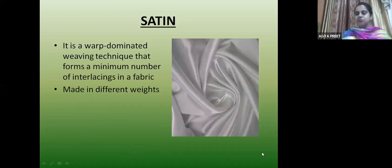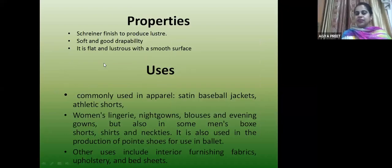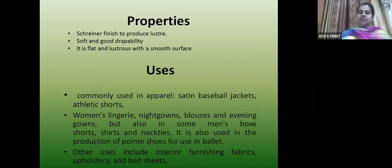Satin fabric is warp-dominated weave and comes in different weights. Properties: finished to provide lustrous, soft and good drapability — flat and lustrous. If the surface is smooth, it reflects the light and appears shiny. Uses: women's lingerie, night gowns, blouses, evening gowns, and interior furnishing fabrics and bedsheets.